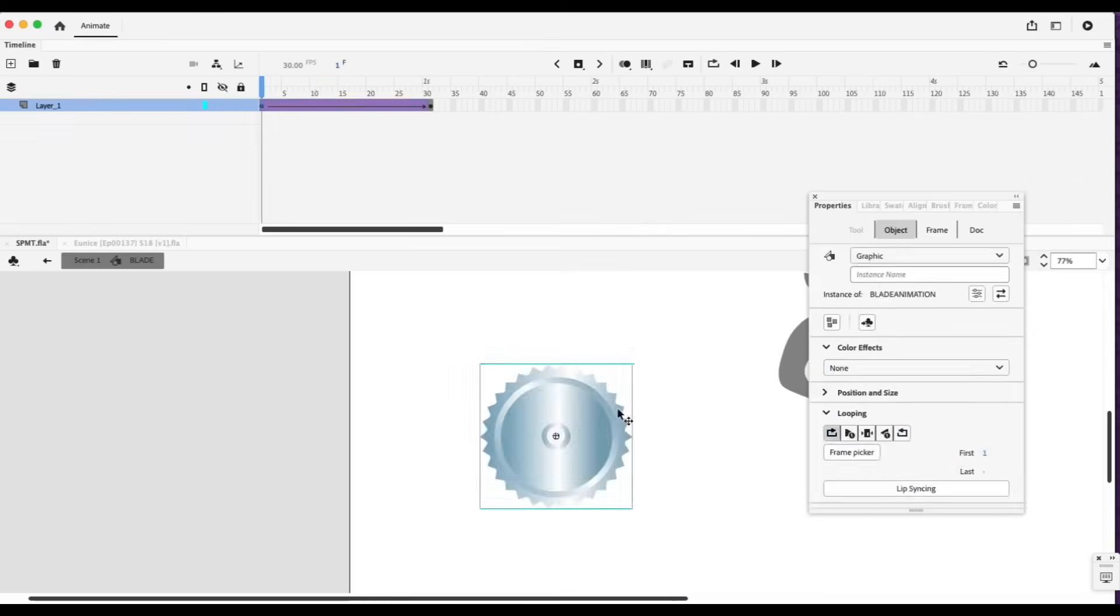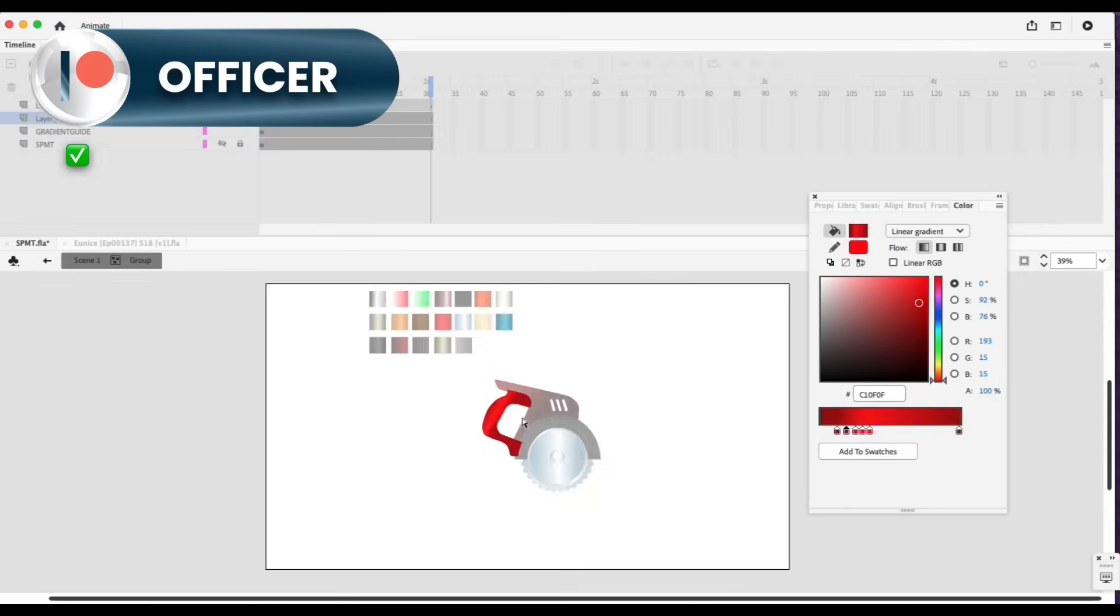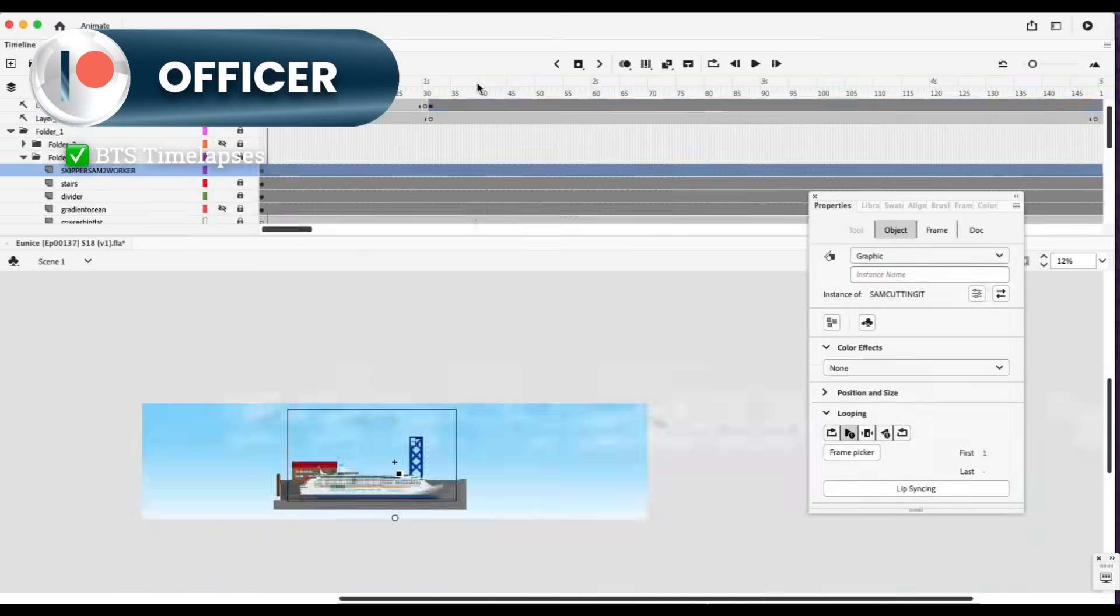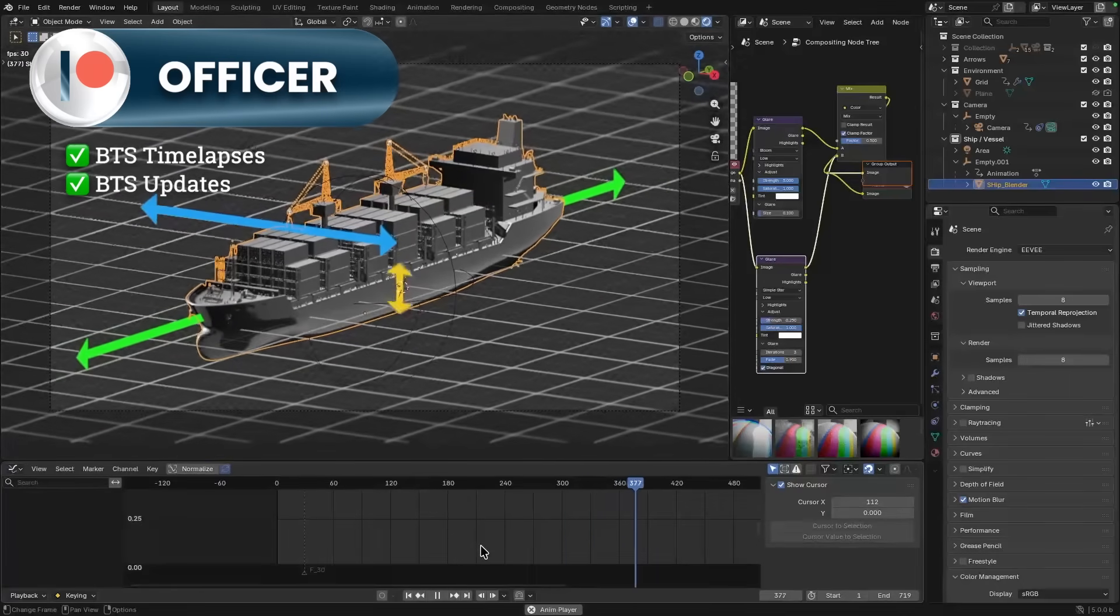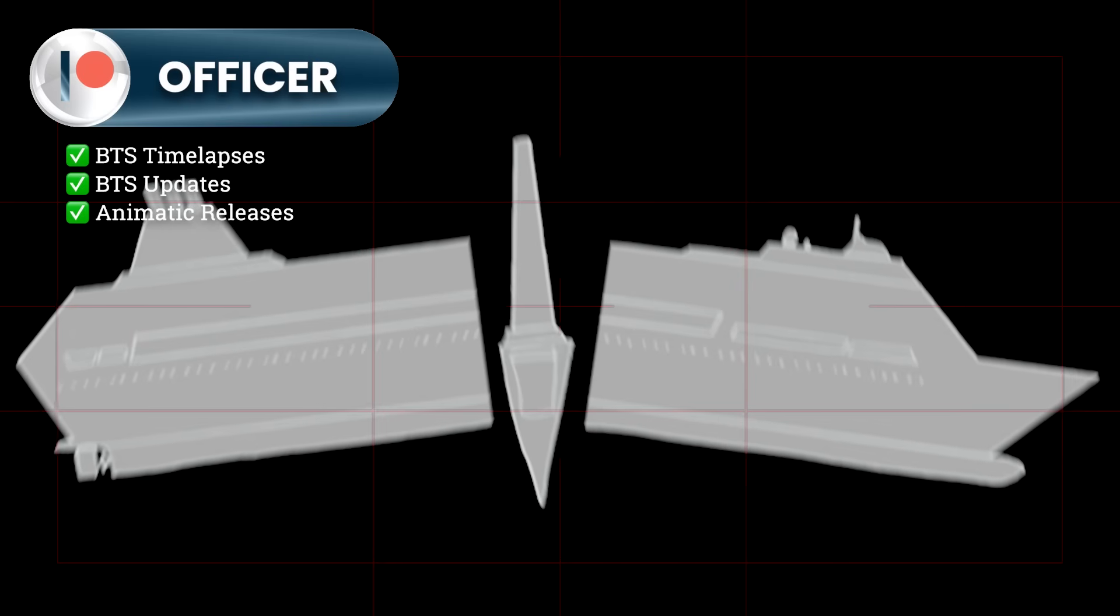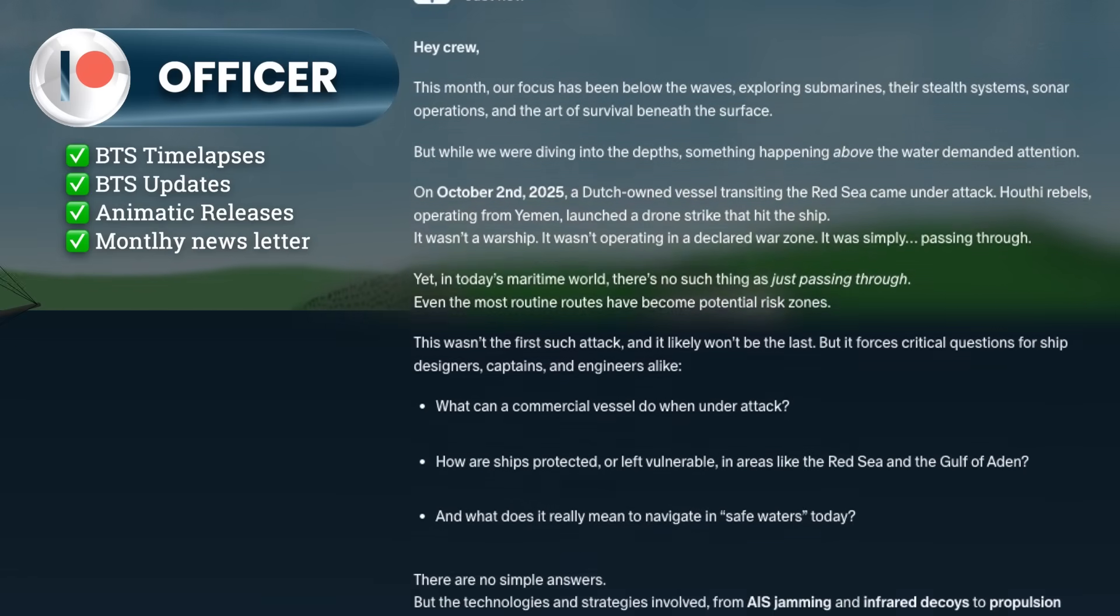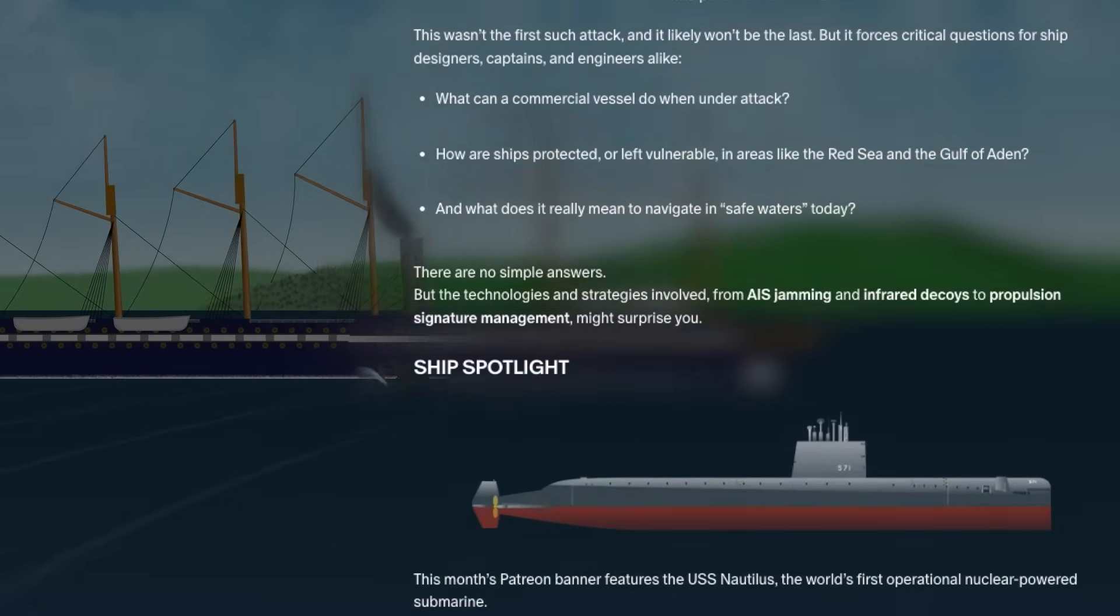If you'd like a closer look behind the scenes, the Officer tier gives you time lapses of our team working hard on brand new animations or thumbnails. You'll also get behind-the-scenes updates, animatic releases, and a monthly newsletter filled with maritime stories and news that we don't cover on the channel.